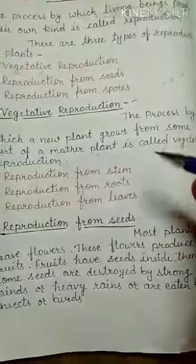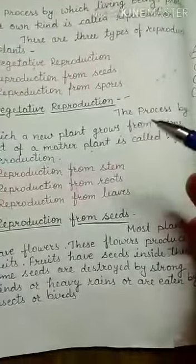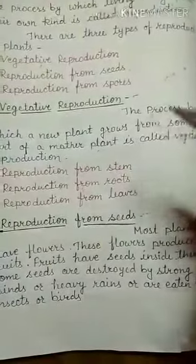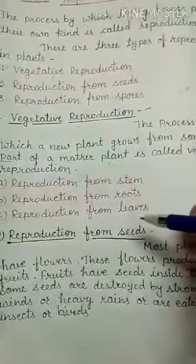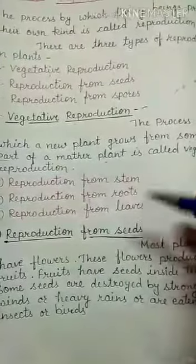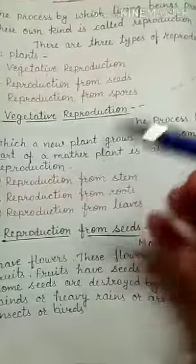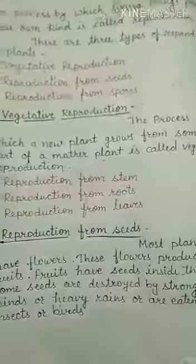Some plants reproduce from their body parts such as stem, roots, and leaves. Let us learn how plants reproduce from their body parts.